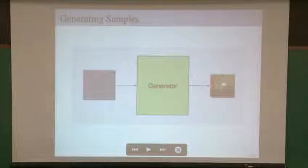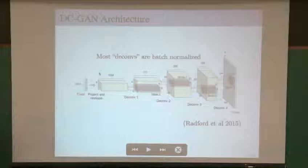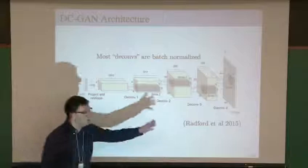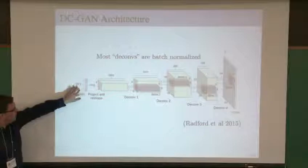In practice, G is typically chosen to be a neural network — specifically a deconvolutional neural network, which is sort of like an inverted convolutional neural network. You start with some relatively low-dimensional vector z, say 100-dimensional, pass it through several layers, and get a high-dimensional image.